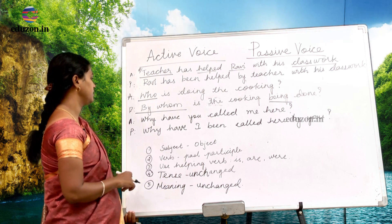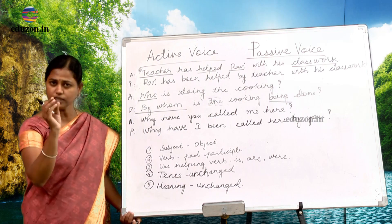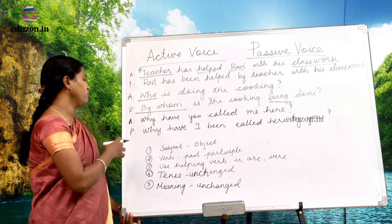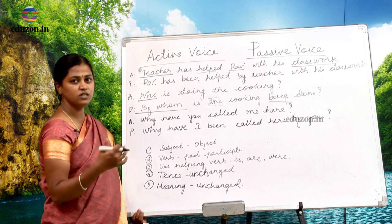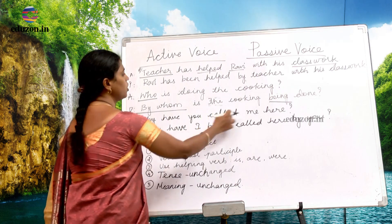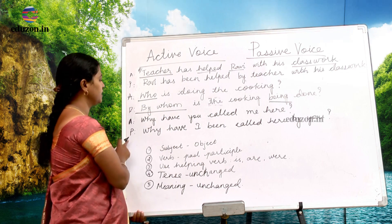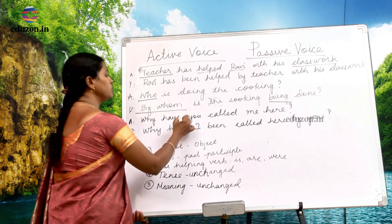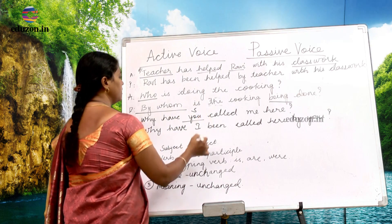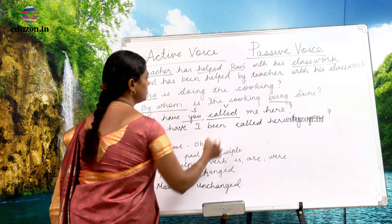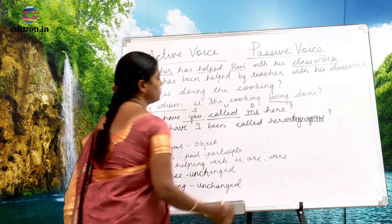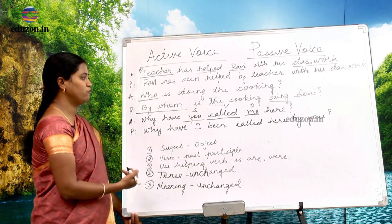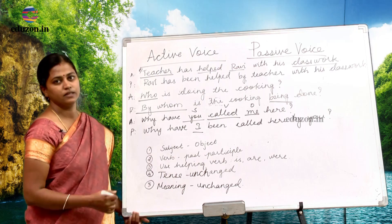Let us look at the third sentence: 'Why have you called me here?' This is a little tricky but not that much — just give it a thought. In active voice, I am asking someone. Who is asking the question? It is 'I.' So in passive voice, it becomes: 'Why have I been called here by you?' Here, 'you' is the subject, 'being called' is the verb, and 'me' is the object.